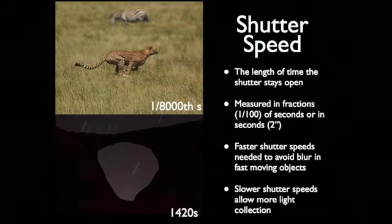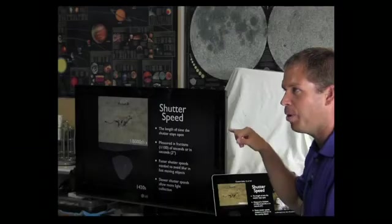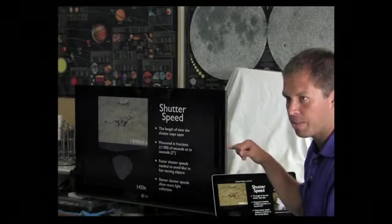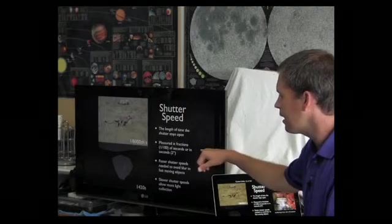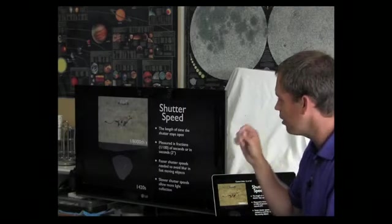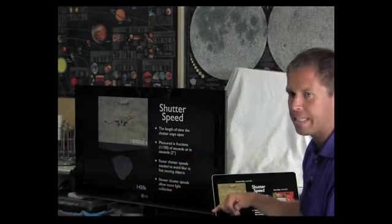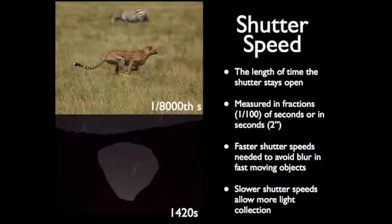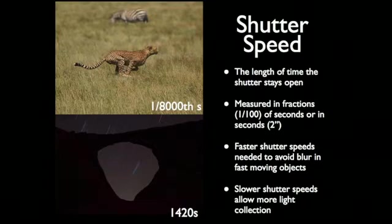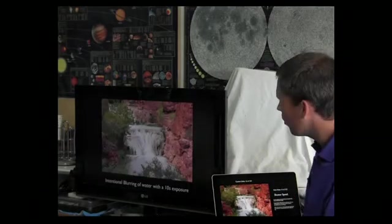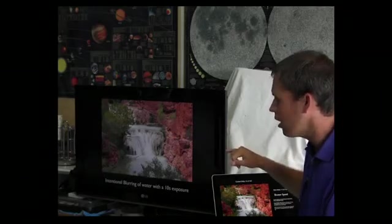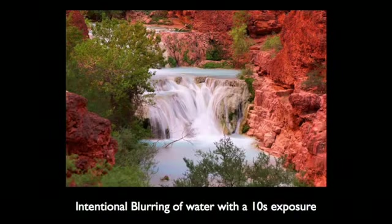Shutter speed — that's a cheetah, and you want to take it at a fast shutter speed so the cheetah isn't blurred. The fastest any camera takes is about 1/8000th of a second; some take 1/4000th. It's the length of time the shutter stays open, measured in fractions of a second or in full seconds. If you want more light, slow it down. You can also do star trails with a long exposure. For fast-moving subjects, use a fast shutter speed. For intentional blurring of water or sand, you want the shutter open longer — but you can't do that hand-holding; you need a tripod.